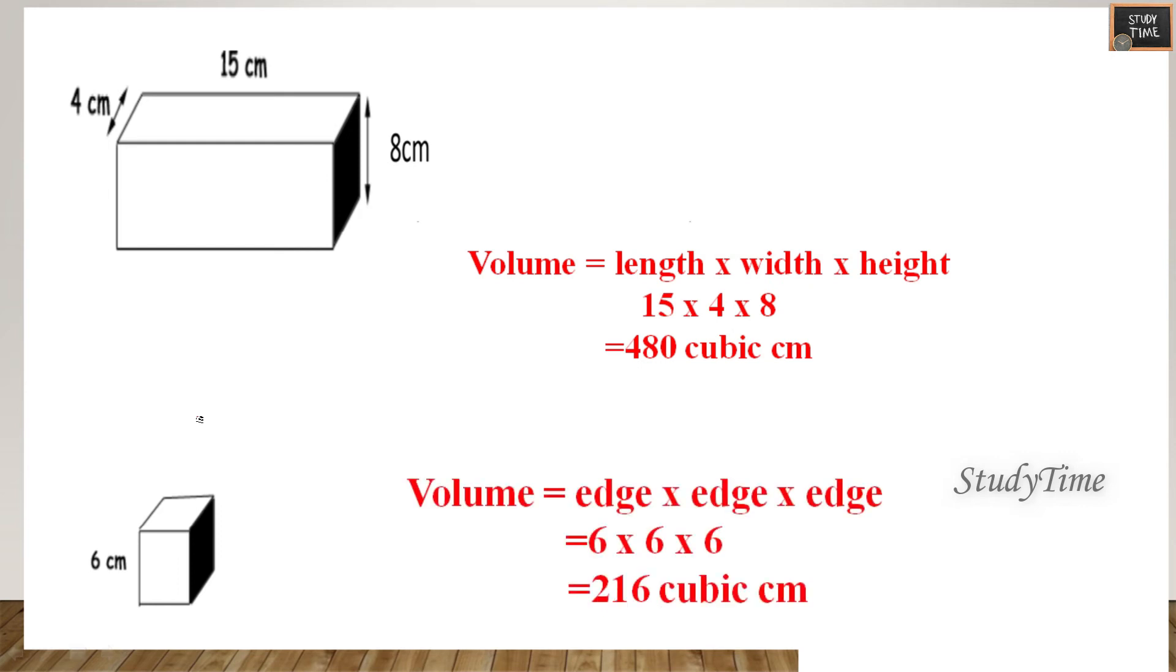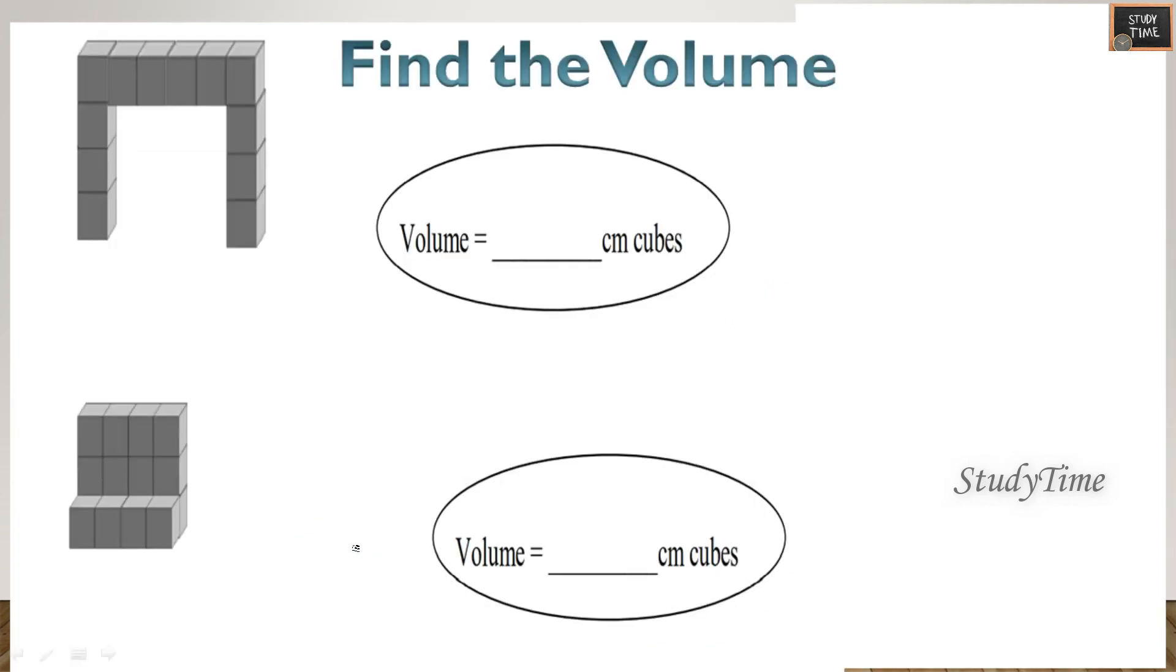Next, find the volume - so length is given, width is given, height is given. So you have to multiply everything: 6 into 4 into 1 is 24 centimeter cubes. Next one is length is 4 and width is 2 and height is 3, so the volume is 3 into 2 into 4, 24 centimeter cubes.